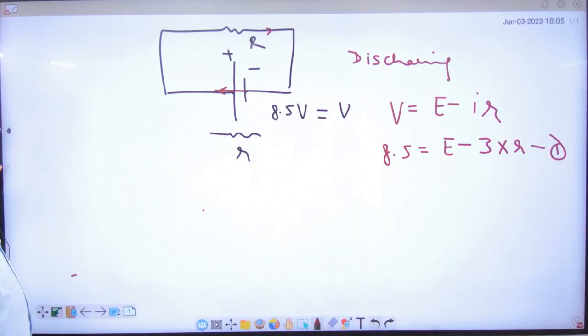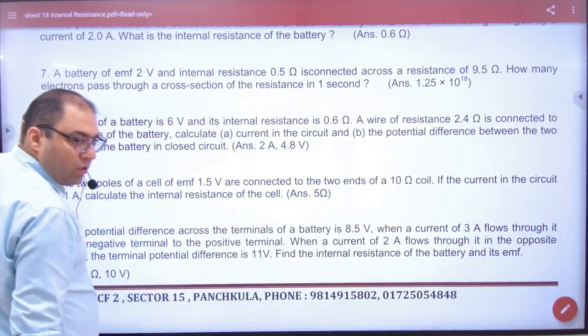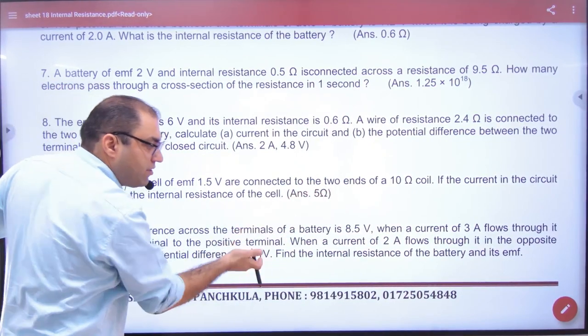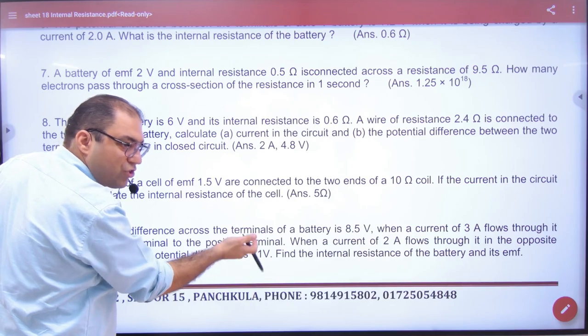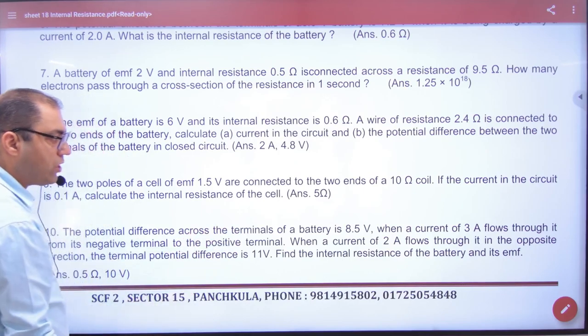Now in the second case, when the current is 2 ampere, the potential difference is 11V. The value is larger compared to the first case. So what is this? This is charging.